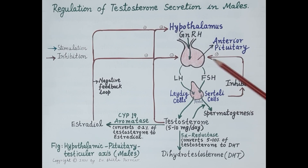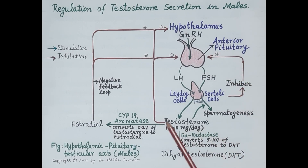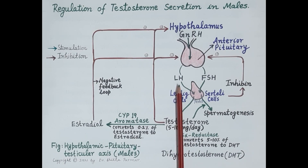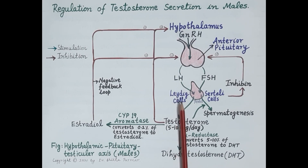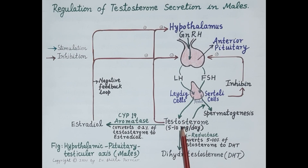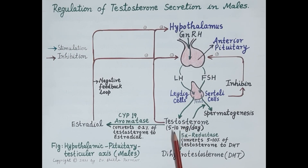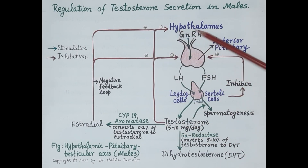Apart from this, LH produced by the anterior pituitary — luteinizing hormone — stimulates the Leydig cells of the testes to secrete the principal male hormone, testosterone. An increase in the level of testosterone in the blood then inhibits the release of gonadotropin-releasing hormone from the hypothalamus.